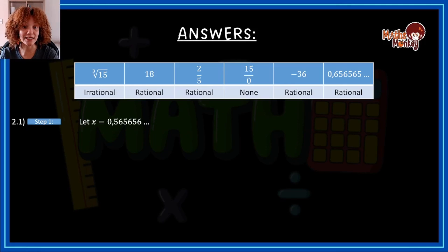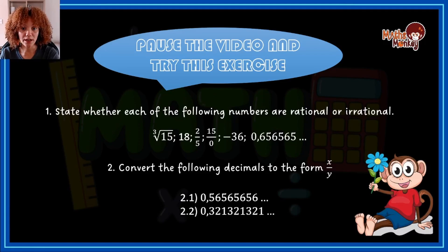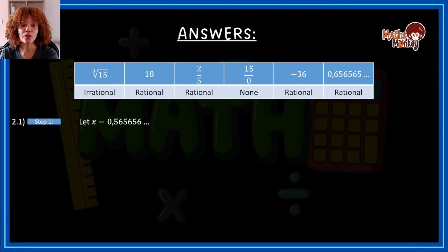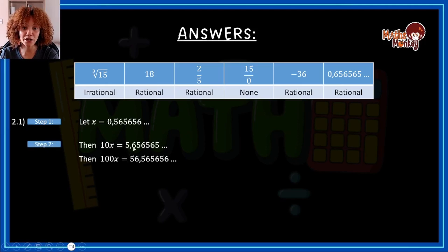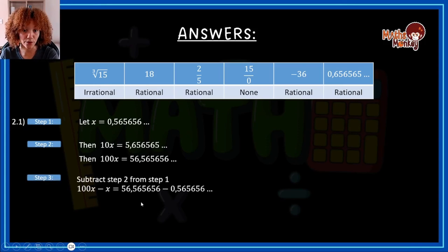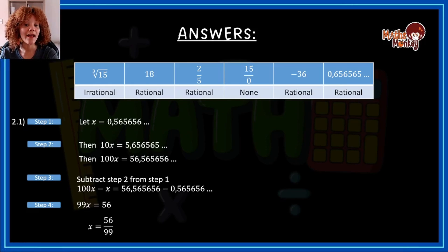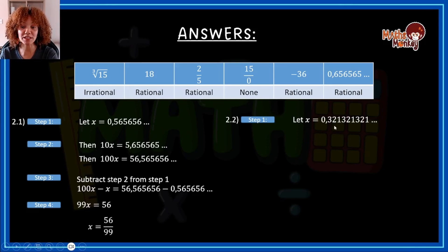Now let's convert 0.565656. If you multiply by 10, you'd have 6 5 after the comma — different order — so you multiply by 100 instead, giving 5 6 after the comma in both. Subtracting gives 99x equals 56, so x equals 56 over 99. That is the fraction equivalent of 0.565656.